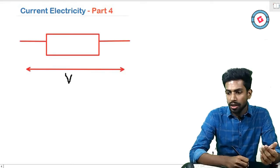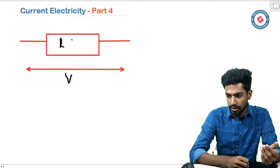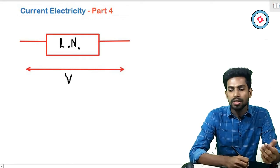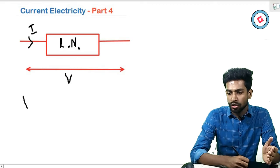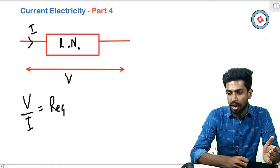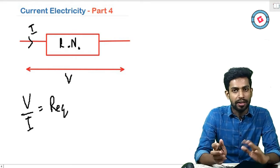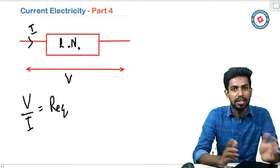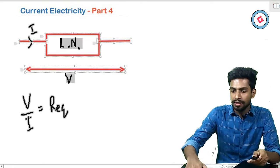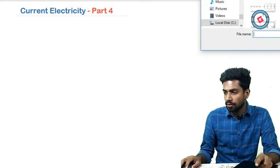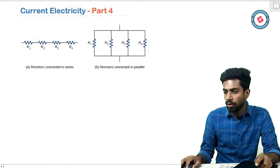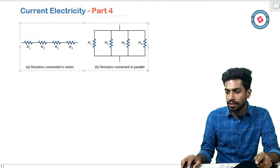Given a supply voltage V and a resistor network, due to that supply voltage V, if the resistor network takes a current of I, then the ratio V to I is defined as the equivalent resistance R_eq. So the equivalent resistance is the ratio between V and I.